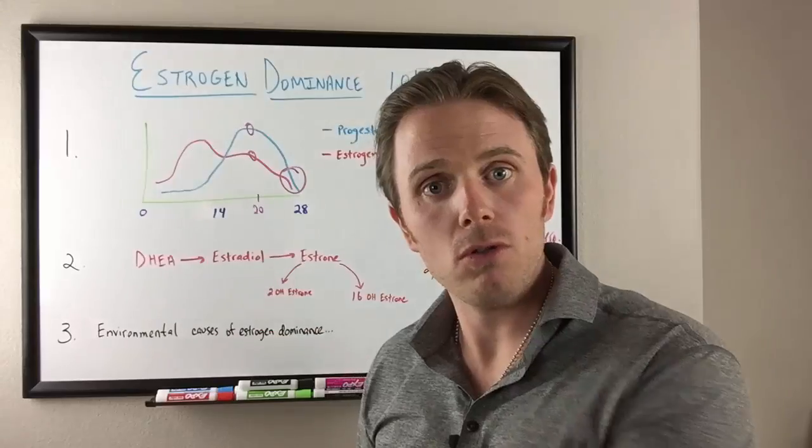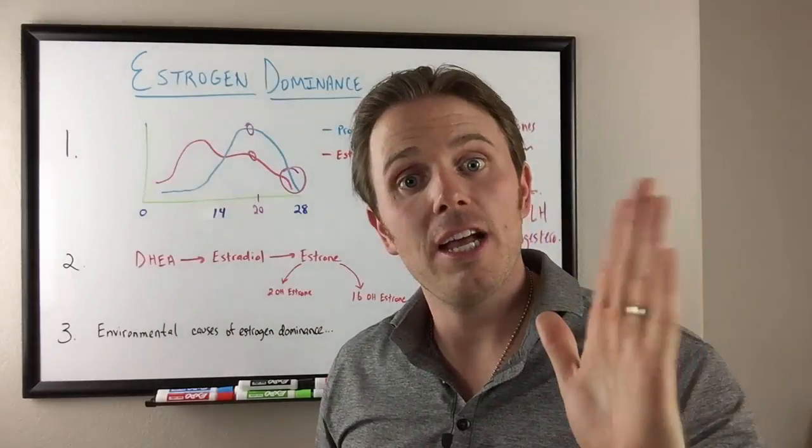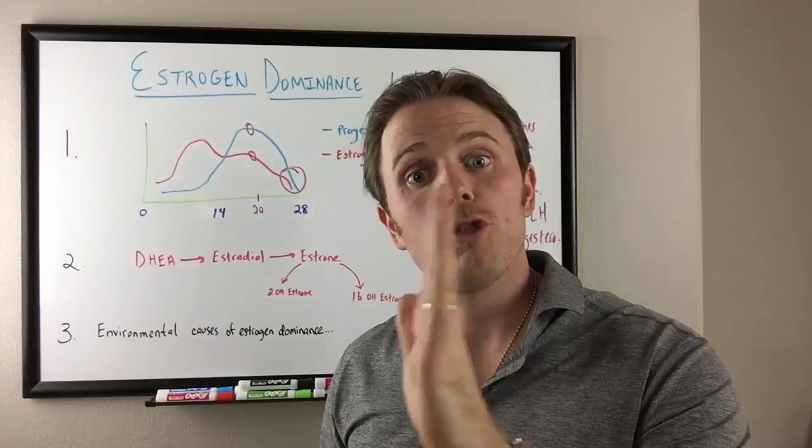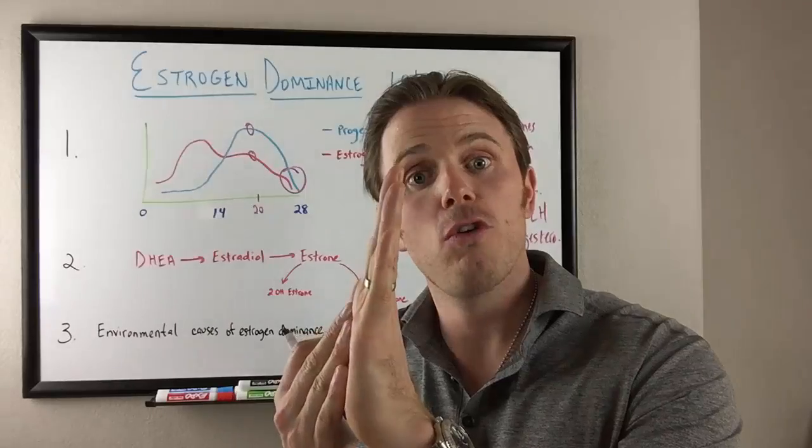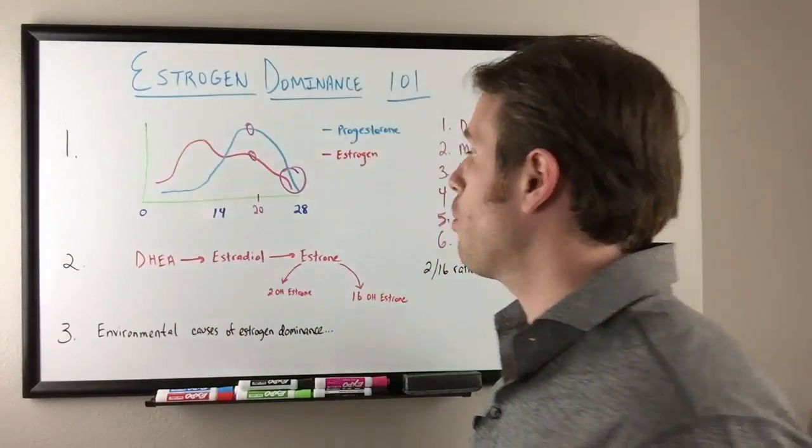And then from there we have our progesterone spiking and then we have that drop in hormones. So one more time, it's basically drop in hormones, FSH follicle making estrogen, estrogen then stimulating LH, LH stimulating progesterone, progesterone peaking, progesterone and estrogen falling, bleeding occurring. That's our normal female hormone cycle.